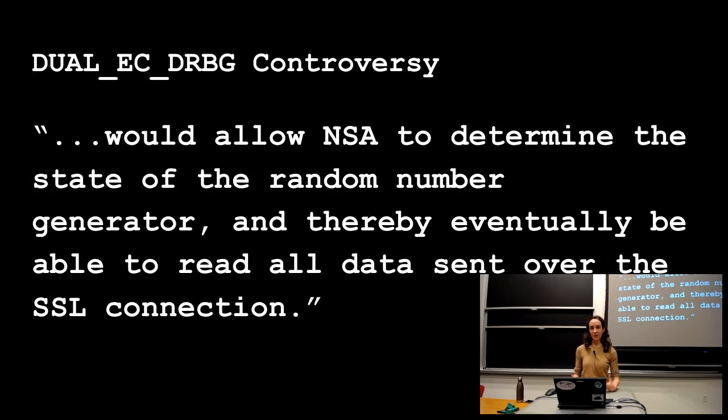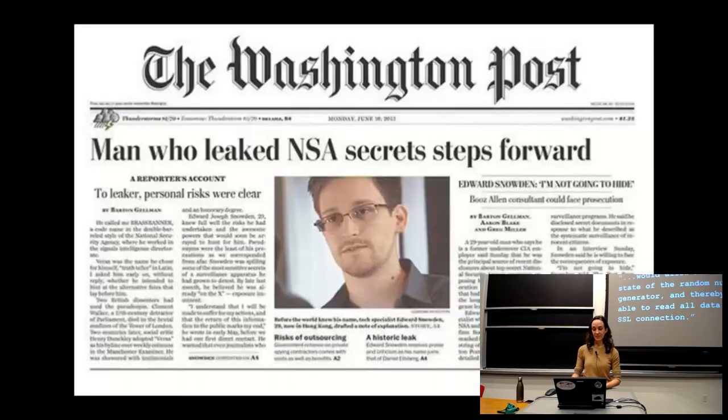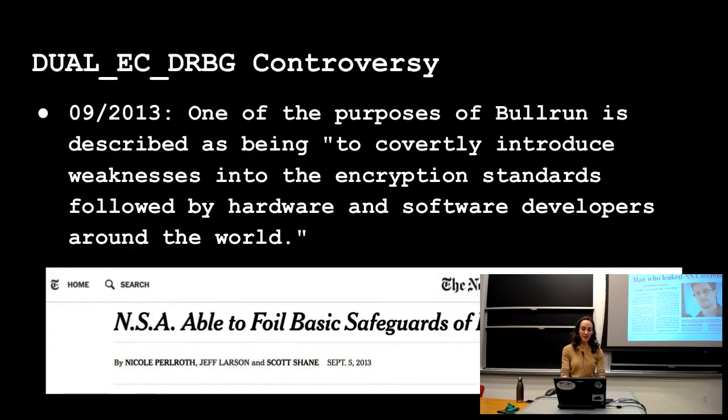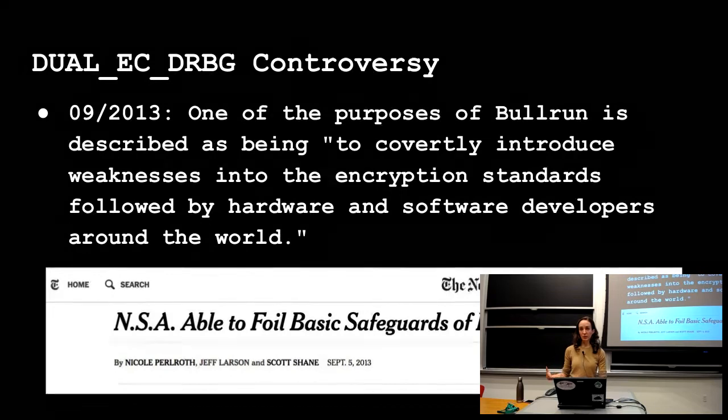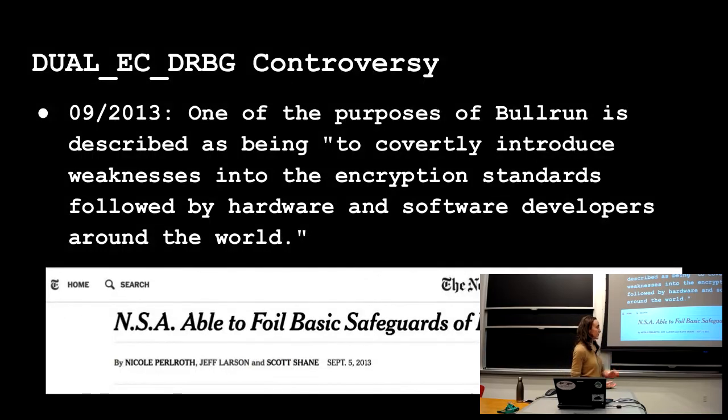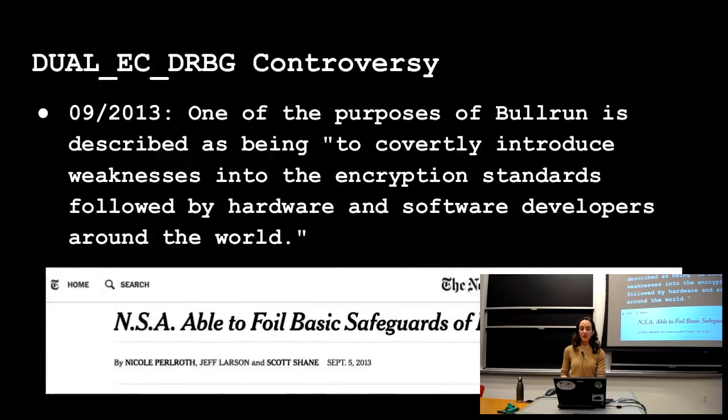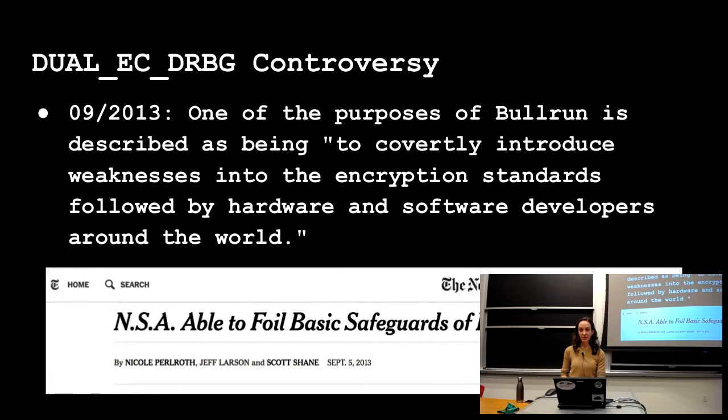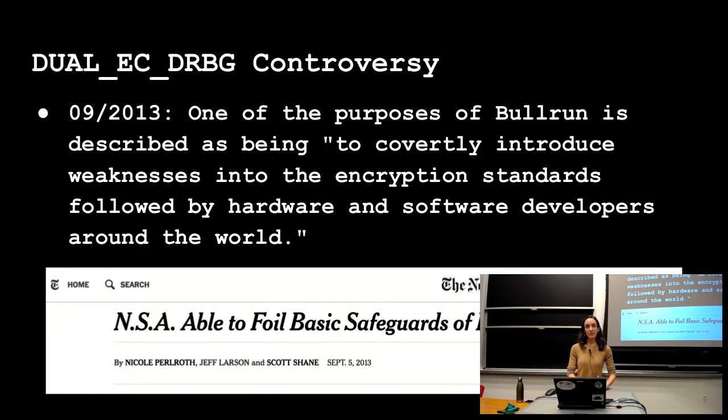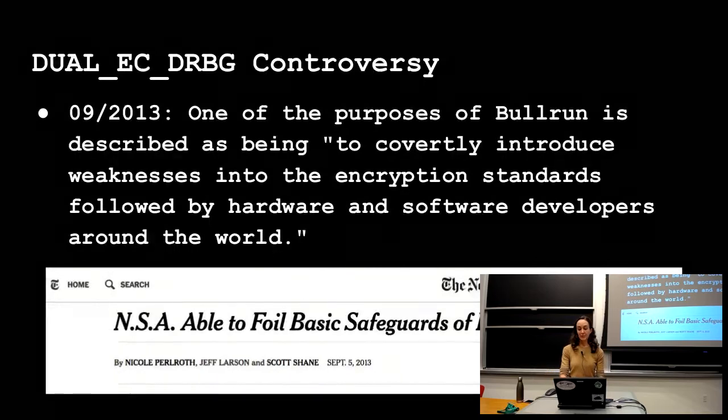So fast forward six years to 2013 with the release of the Snowden papers, and this comes up again. This program called Bullrun is referenced in the Snowden papers, and in this article in the New York Times entitled, NSA Able to Foil Basic Safeguards of Privacy on Web, they write about this, and they say, one of the purposes of Bullrun is described as being to covertly introduce weaknesses into the encryption standards followed by hardware and software developers around the world. So we can see how this has escalated from a flaw in this algorithm to something that they think the NSA put there to something that is part of a larger plan to introduce systemic flaws into encryption standards everywhere. So getting more and more concerning here. And then later that year, the NIST finally recommended removal of the algorithm as a standard.